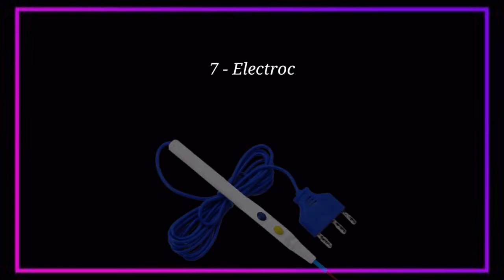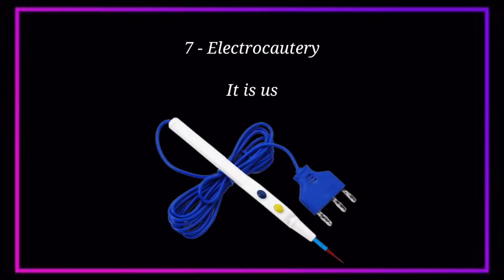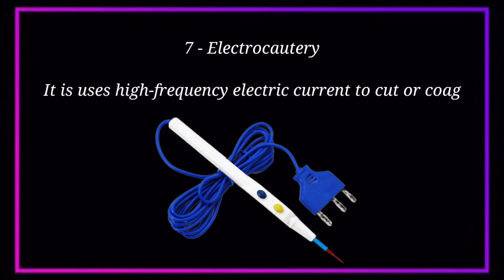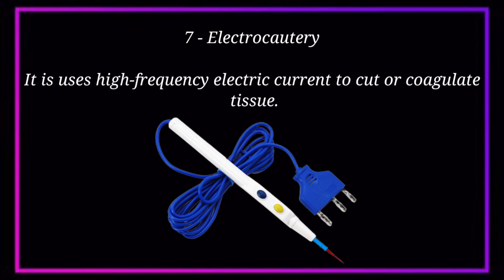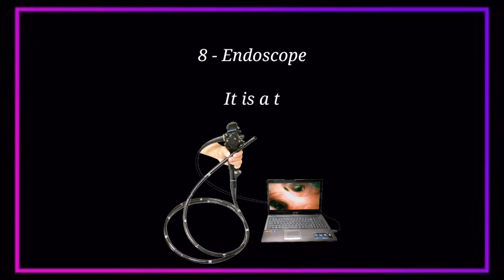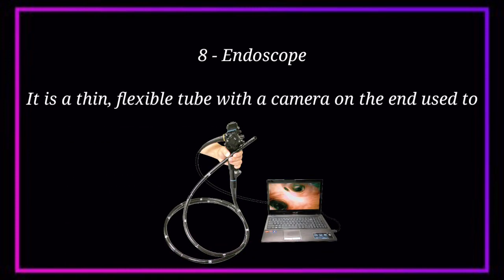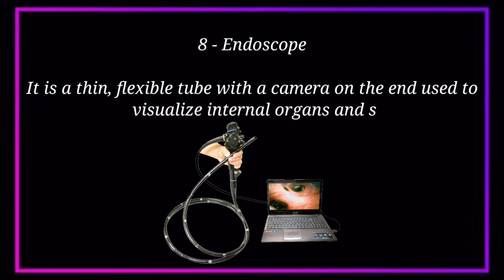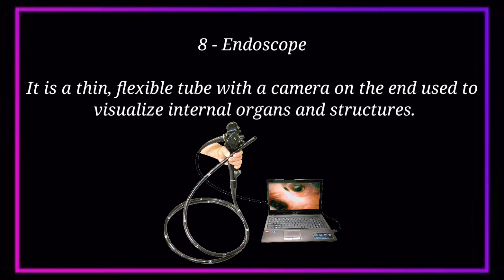Number 7. Electrocautery. It is used with high-frequency electric current to cut or coagulate tissue. Number 8. Endoscope. It is a thin, flexible tube with a camera on the end used to visualize internal organs and structures.